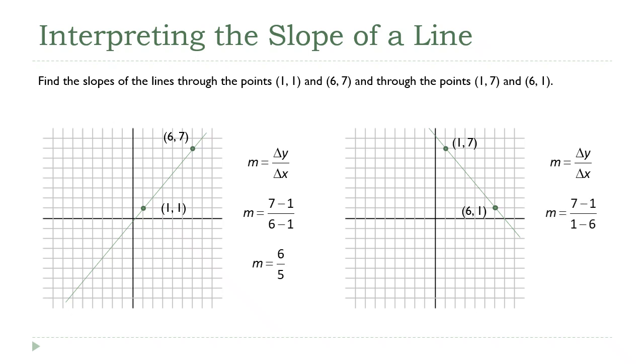We're going to do the same difference. The difference of the y's on the top, that's 7 minus 1. The difference of the x's on the bottom, that's 1 minus 6. You do the arithmetic, and you get negative 6 fifths.